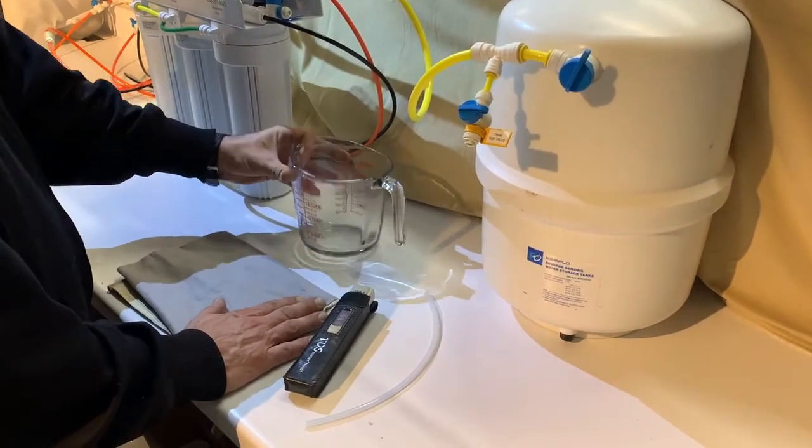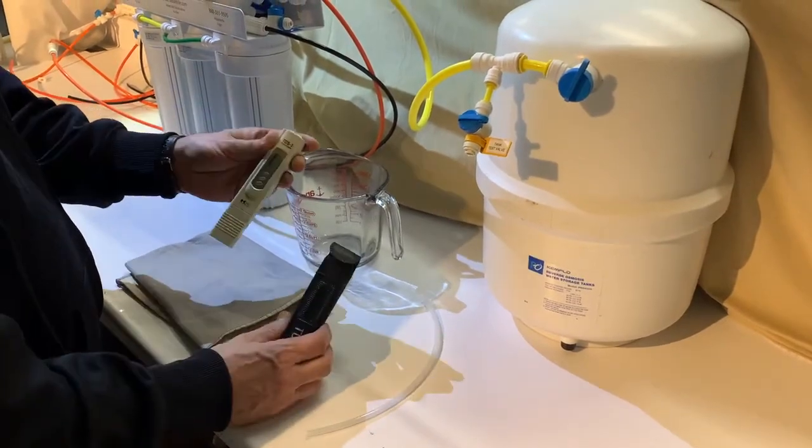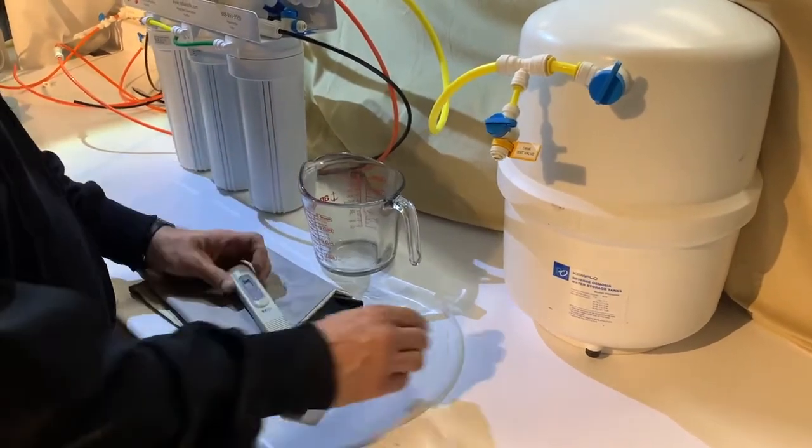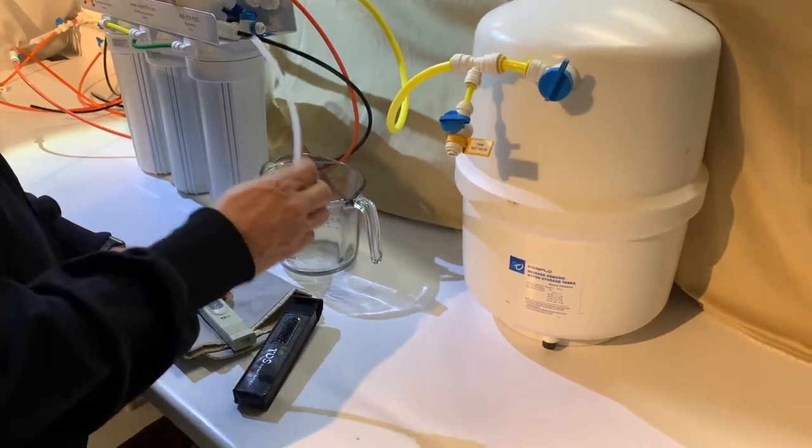You're going to need a catch container, possibly a cloth or paper towel, most importantly the TDS meter that came with the system, and the extensions if you have them. If you do not, they are not necessary.